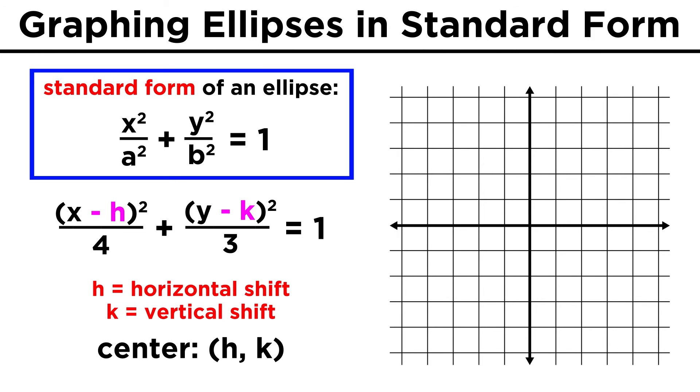Notice the minus signs, so X minus two will mean a shift of two to the right, not left. When we have H and K terms, the ellipse has a center at the point HK, and everything else we learned about the axes and foci will stay the same.